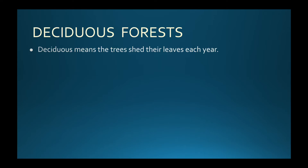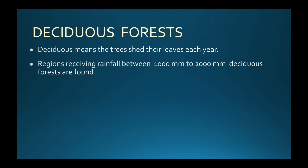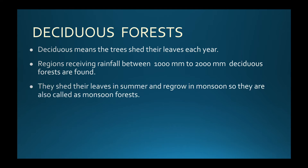Deciduous forests — deciduous means trees that shed their leaves each year. Regions receiving rainfall between 1,000 to 2,000 millimeters have deciduous forests. These trees shed their leaves in summer and regrow in the monsoon season, so they are also called monsoon forests.